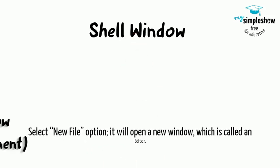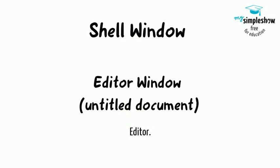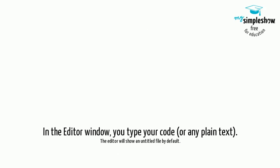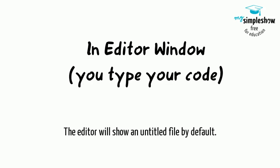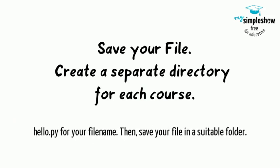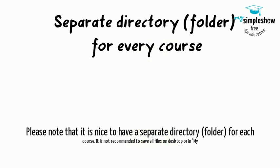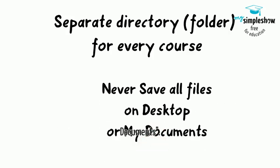In the shell window, click on File in the top left corner and select the New File option. It will open a new window, which is called an editor. In the editor window, you type your code or any plain text. The editor will show an untitled file by default. While in the editor window, click on File and Save. You can use hello.py as your file name, then save your file in a suitable folder. It is nice to have a separate directory for each course, and it is not recommended to save all files on the desktop or in My Documents.